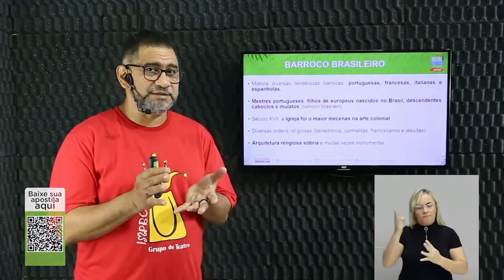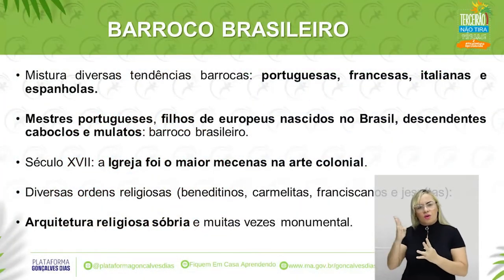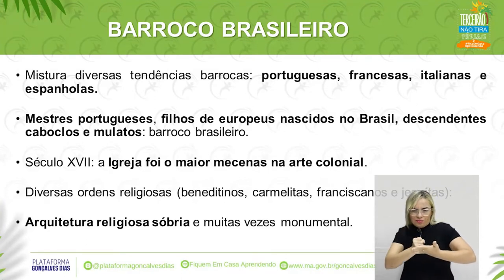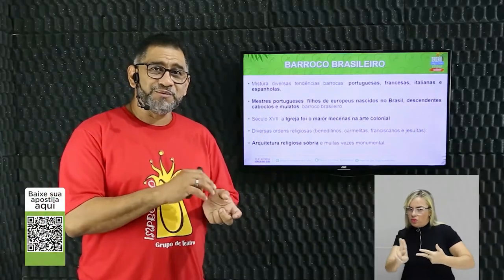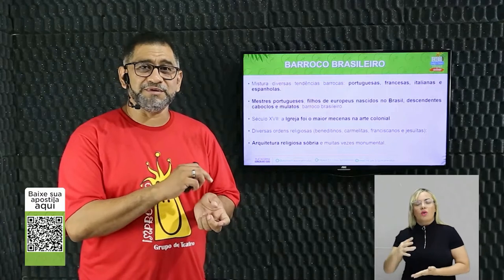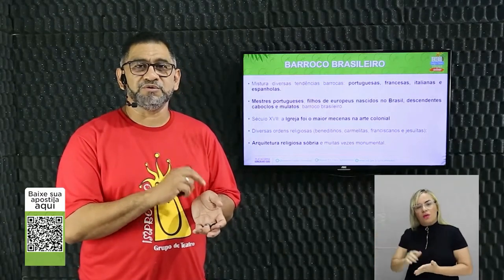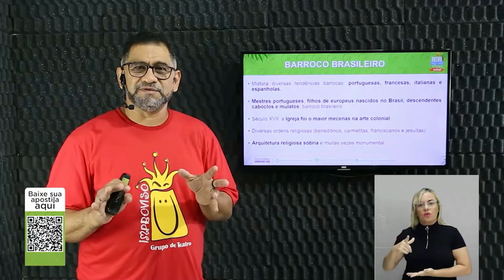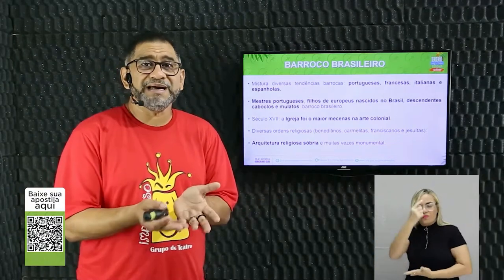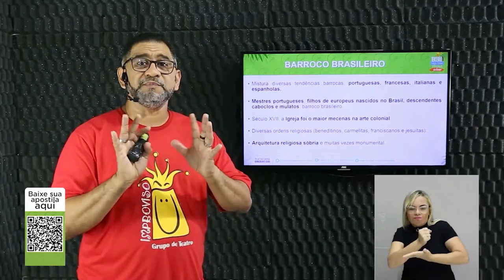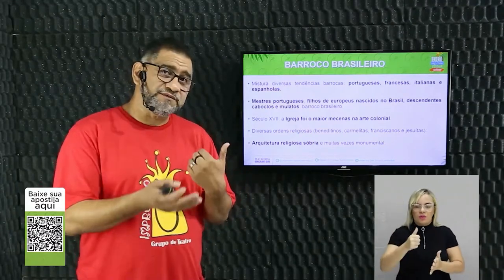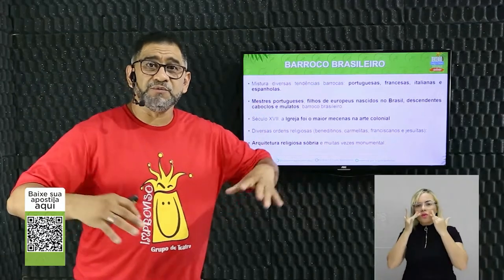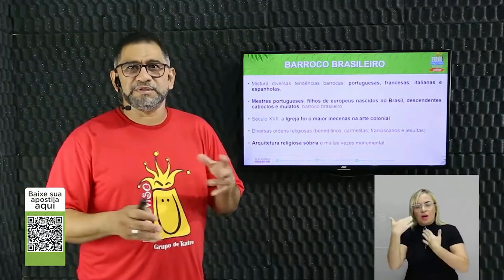Para entender o Barroco Brasileiro, um nome é bem pertinente: o apelido de Aleijadinho. Nota: o ENEM não usa esse apelido. O nome do artista é Antônio Francisco Lisboa — esse nome tem que entrar na cabeça de vocês, pois é a figura mais importante do Barroco Brasileiro. Aqui nós elencamos os assuntos mais trabalhados e alguns outros prováveis, porque sempre há mudança ou outra.